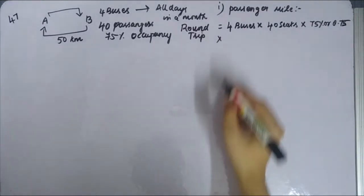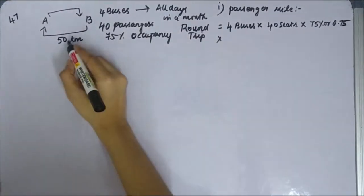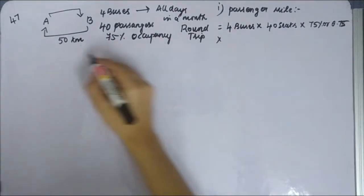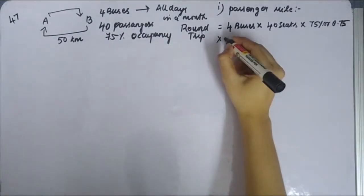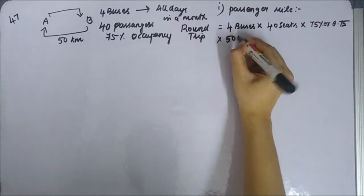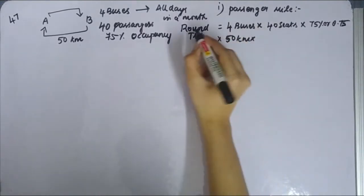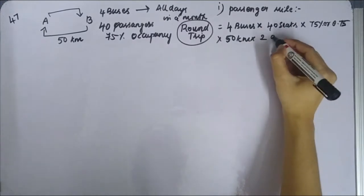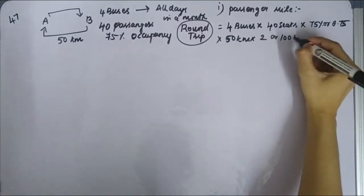Into, so in total that is 50 km of distance. So 50 kilometers. And they have said it is a round trip. So into 2. If you put it in total, they have put it in 100 kilometers.